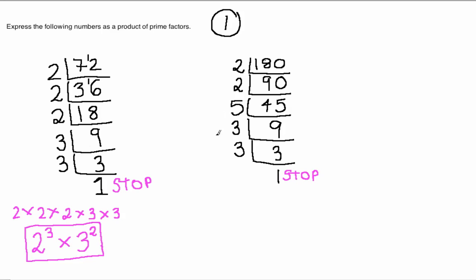So let's combine these together. 2 times 2 is the equivalent of 2 squared, multiplied by 5. There's only one 5, so we can just write the number 5 down. And 3 times 3 is the same as 3 squared.